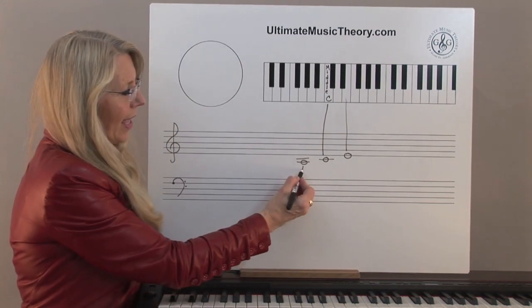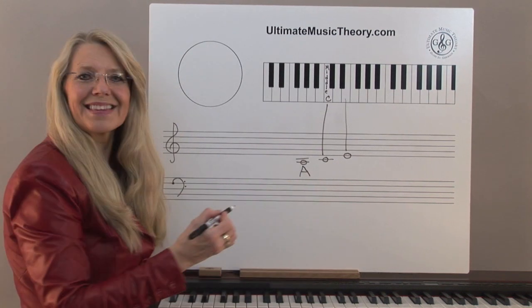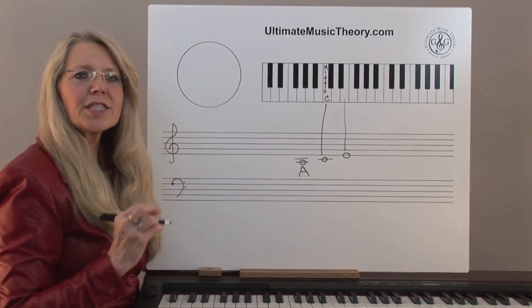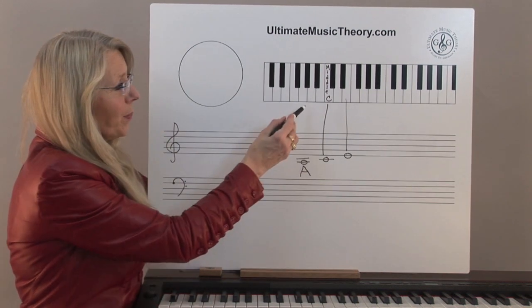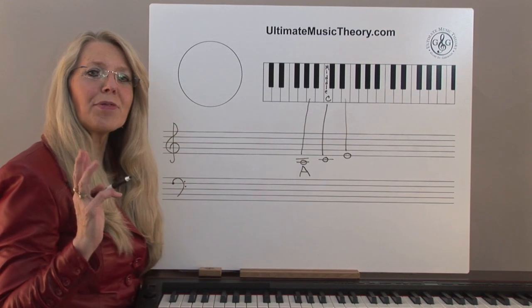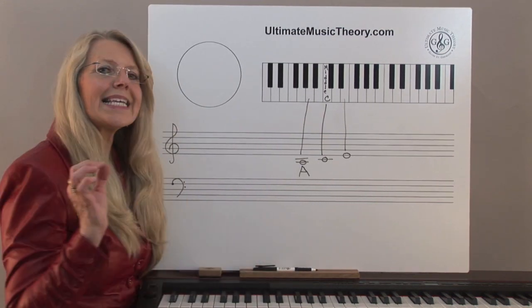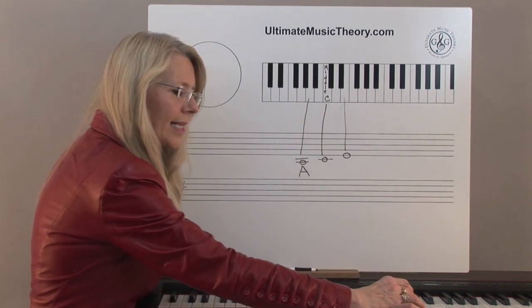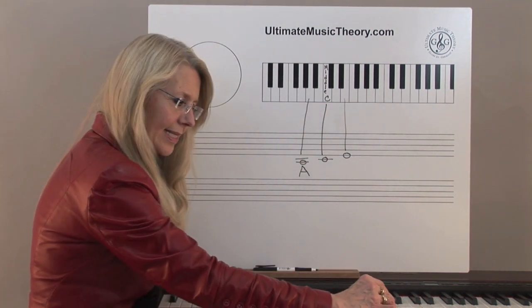So here we have A. Step two, draw corresponding lines from the note on the staff to the key on the keyboard at the correct pitch. Step three, play the note on the keyboard so students can hear and identify the sound of the pitch. Here's middle C and here's A below middle C.